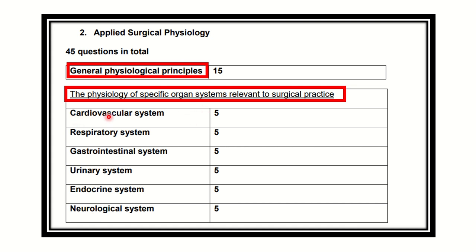The organ system breakdown is as follows: Cardiovascular system — 5 marks, Respiratory system — 5 marks, Gastrointestinal system — 5 marks, Urinary system — 5 marks, Endocrine system — 5 marks, and Neurological system — 5 marks.